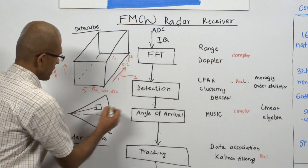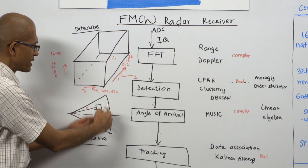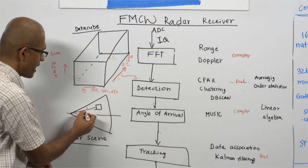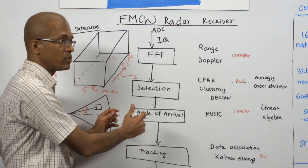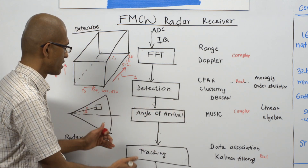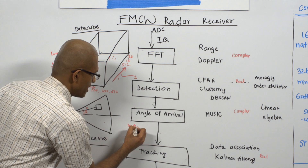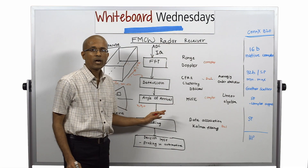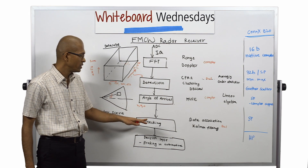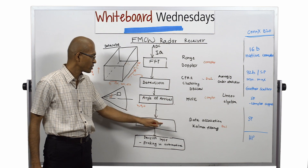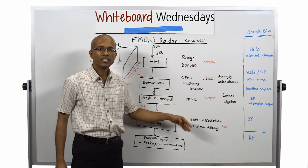At this point we have the range of the target, but to locate the target in the radar scene, we also need the angle. To find this angle, angle-of-arrival processing using the MUSIC algorithm needs to be applied. Once we do the angle-of-arrival processing, we get range, angle, and velocity information. To have robust detection and robust location of the object, we need to process tracking — the tracking algorithms are the data association and Kalman filter algorithms.